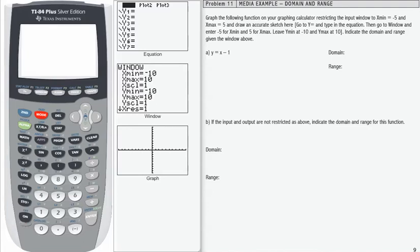Let's see the steps we would take to use our calculator to graph our given function y equals x minus 1. In our calculator, we're going to press the y equals button and then enter x minus 1.